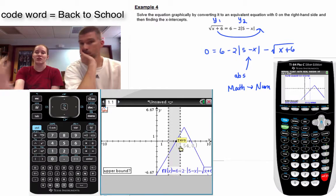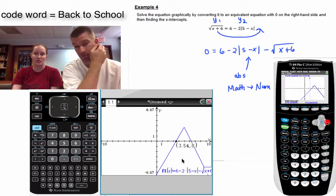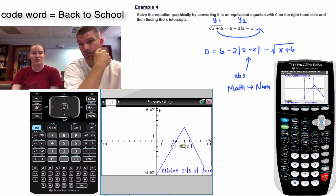We should have a calculator up. Yes, we do. So you should see that we've got like a downward V.